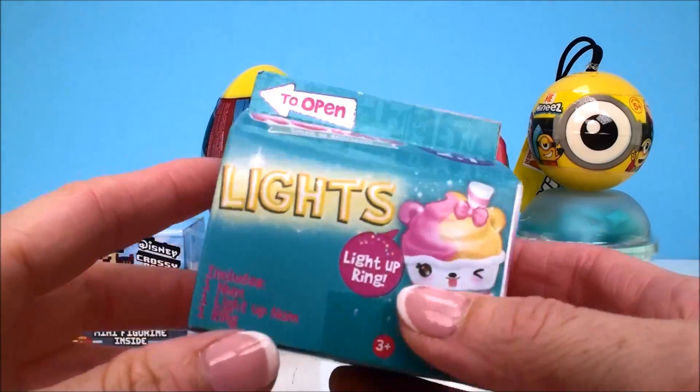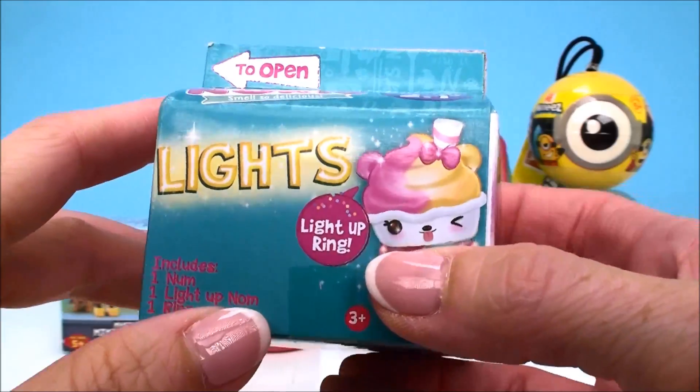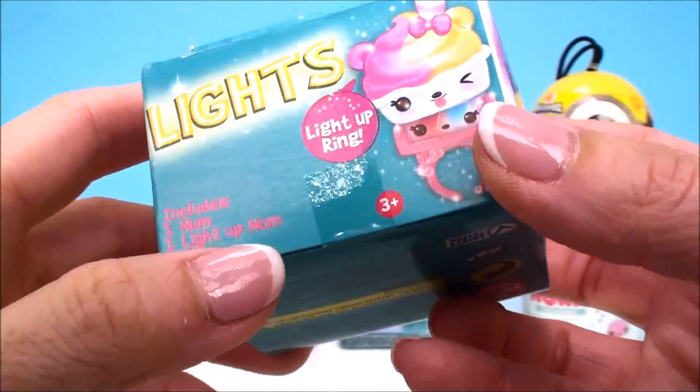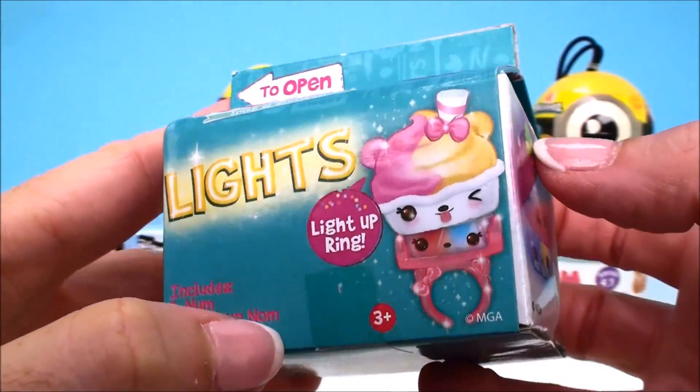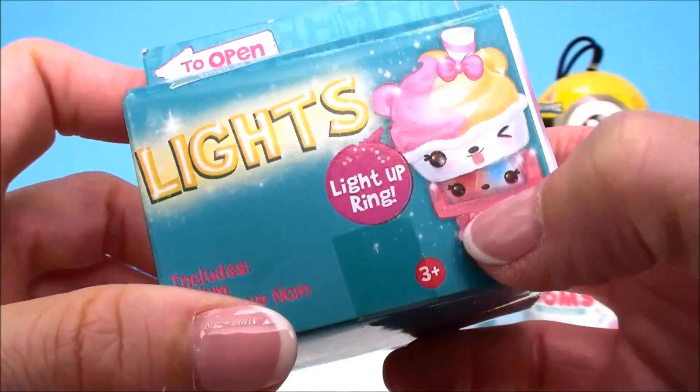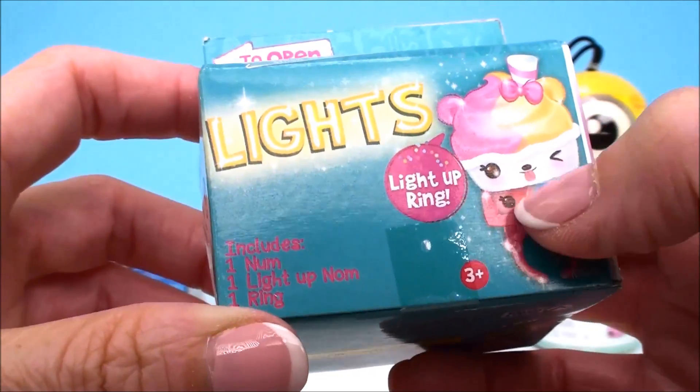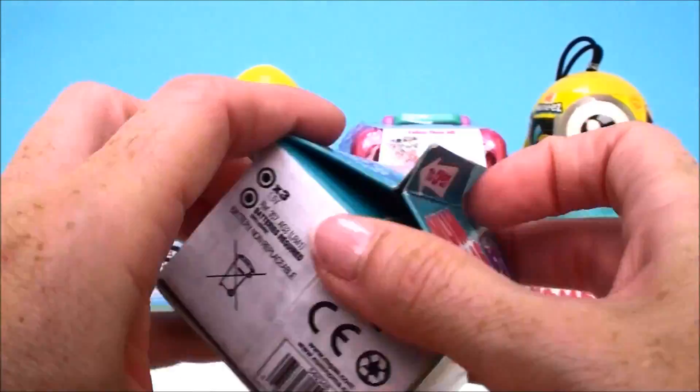Our first one comes from Num Noms and this is the brand new Series 2.1 Lights Edition. These are super cute because not only do you get all the new lights but you get to wear them. They come with this little ring that you attach your Nom to and then you can wear it anywhere you go.